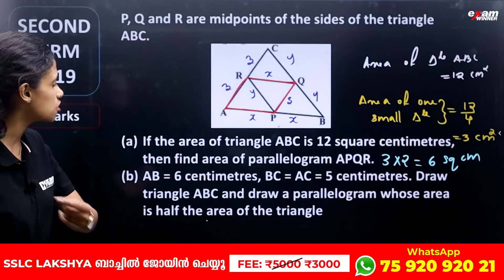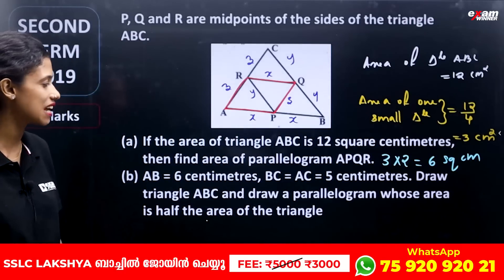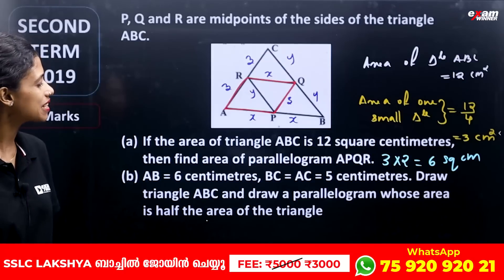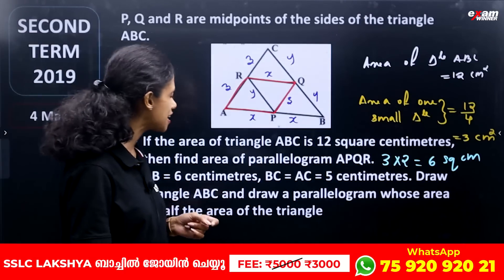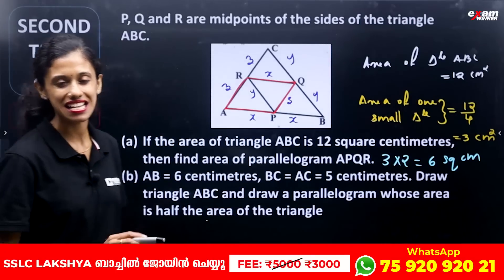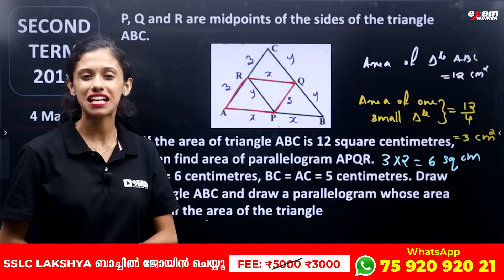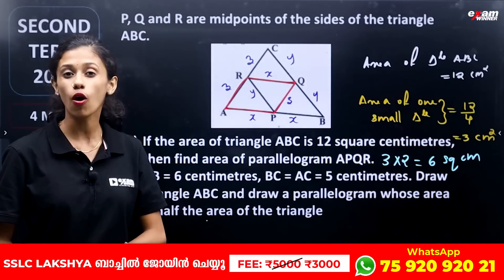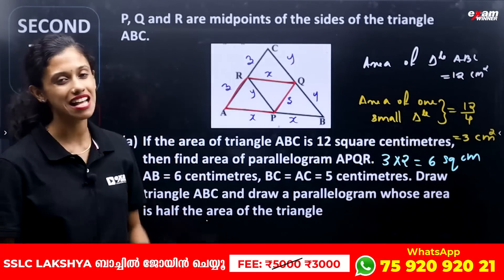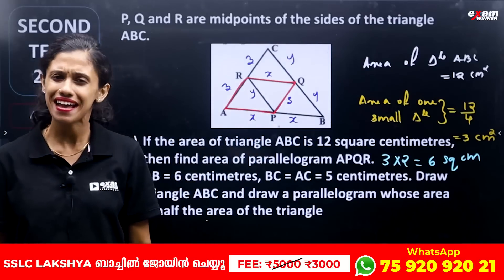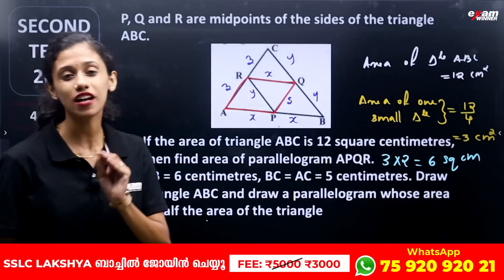Now let us know that AB is equal to 6 centimeters, BC is equal to 5 centimeters, and AC is equal to 5 centimeters. We will see the triangle. Draw a parallelogram whose area is half of the area of the triangle. The triangle has sides 4 into 3 square centimeters.